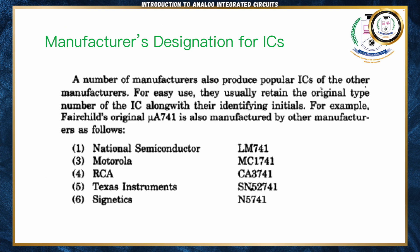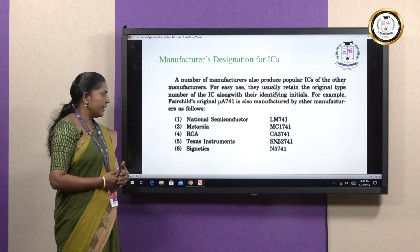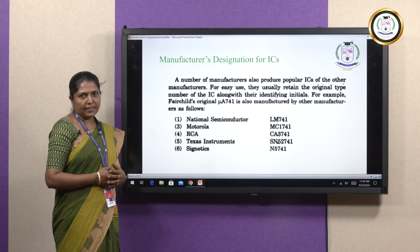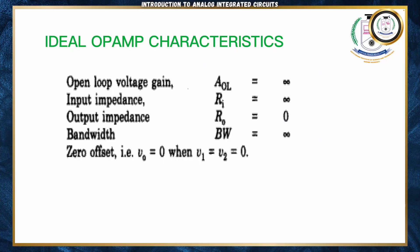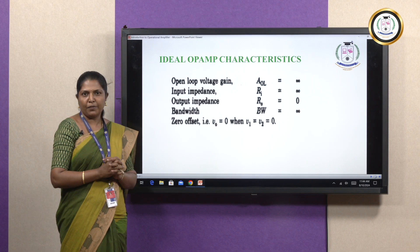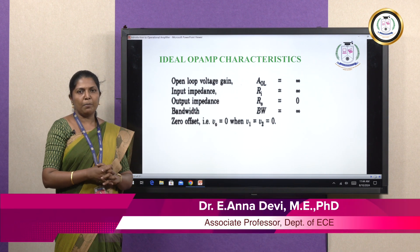Many companies manufacture the operational amplifier or IC 741. Some major manufacturers are National Semiconductor, Motorola, RCA, Texas Instruments, and Signetics. Now we should know about the characteristics of the operational amplifier. There are some basic ideal operational amplifier characteristics, and these are the five important characteristics of the op-amp.